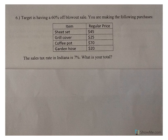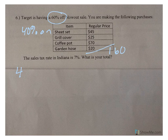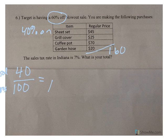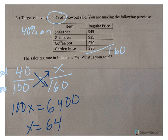Moving on to the last problem — I like this one. Target's having a 60% off blowout sale. You're making the following purchases: sheets, grill, coffee pot, garden hose — things that you need. If you total all of these up, it would cost $160 at full price. We are not paying full price. It's 60% off, which means it's 40% on, so we are paying 40%. This is the sale price, this is the regular price. Regular price was $160. Cross multiply: 100X equals 6,400. The sale price for all of these items is $64.